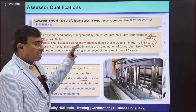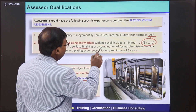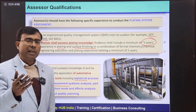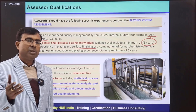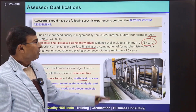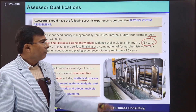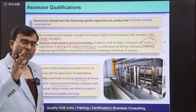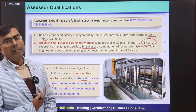The third requirement is that the assessor must have five years of experience in plating and surface finishing processes. It is not mandatory that they must have worked in a plating environment for all five years. For example, if they have a four-year degree in chemical engineering or chemistry and a couple of years of experience in a plating environment, that satisfies the five-year overall experience requirement. If they have no technical degree but have worked in the plating industry for five years with strong understanding of plating, that also suffices. So the three critical requirements are: system knowledge, core tools familiarity, and plating experience.